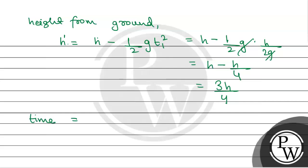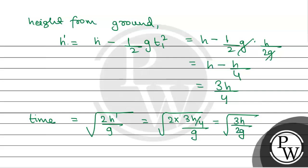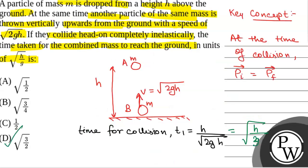The time for the combined mass to fall from height 3h/4 to the ground is root(2h'/g) = root(2 × 3h/4 / g) = root(3h/2g) = root(3/2) × root(h/g). So the correct answer is root(3/2), which is option D. Hope you all understood it well. Best of luck.